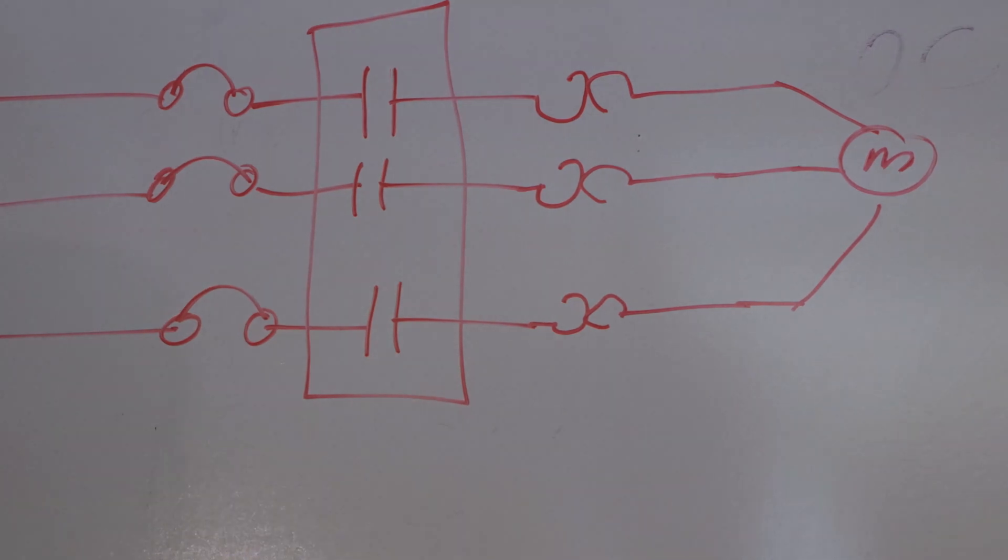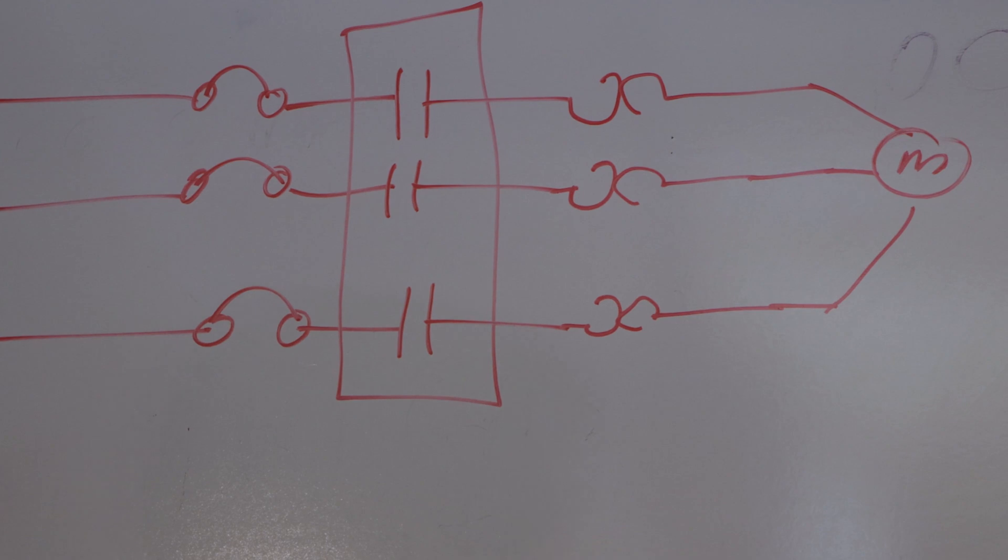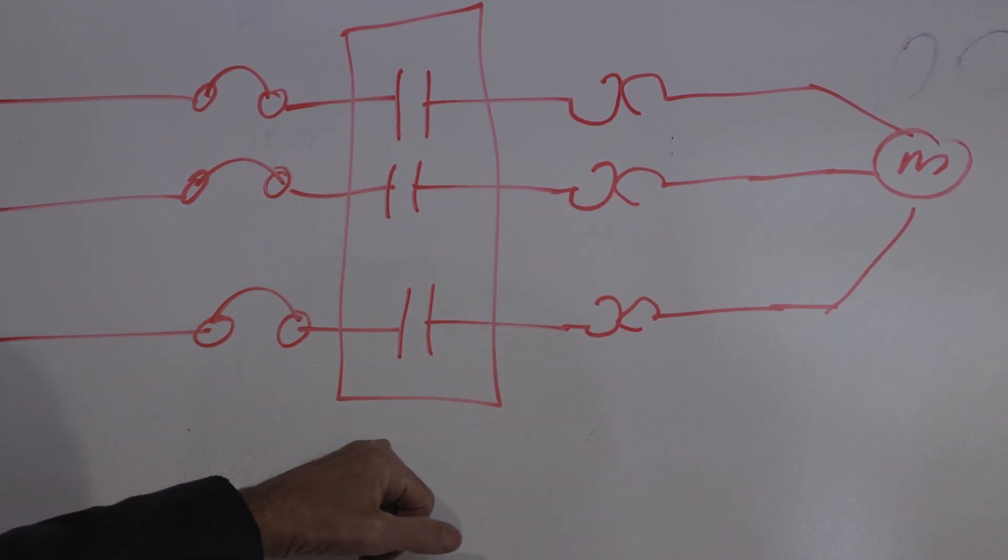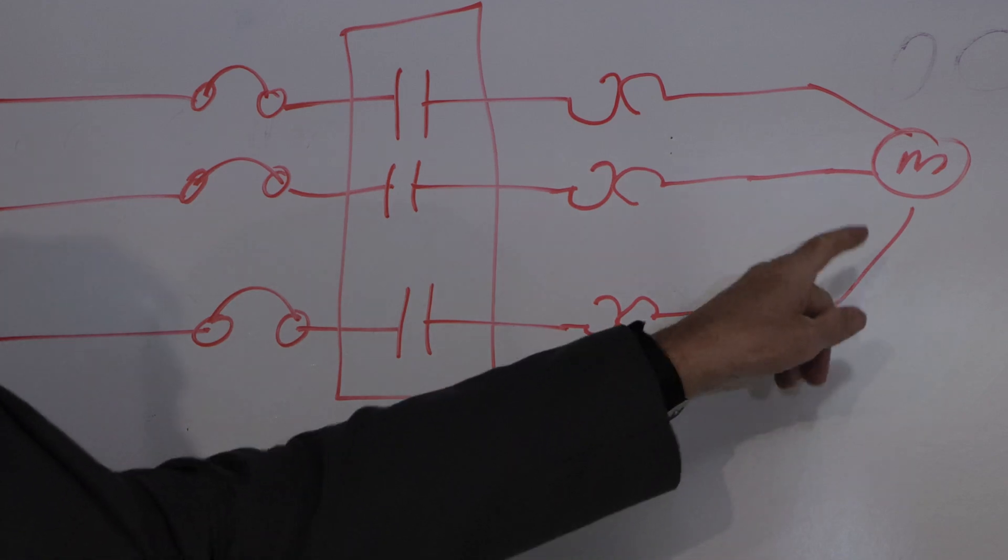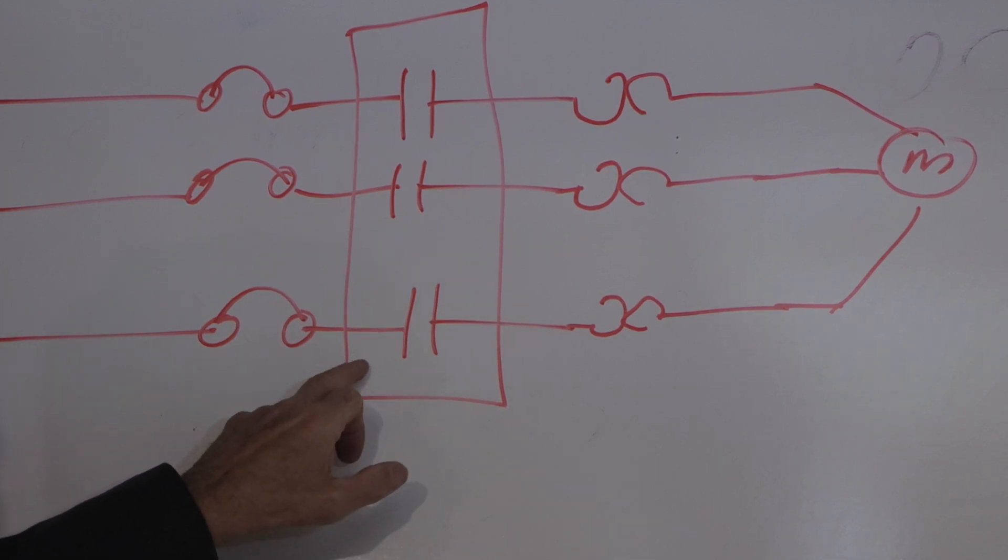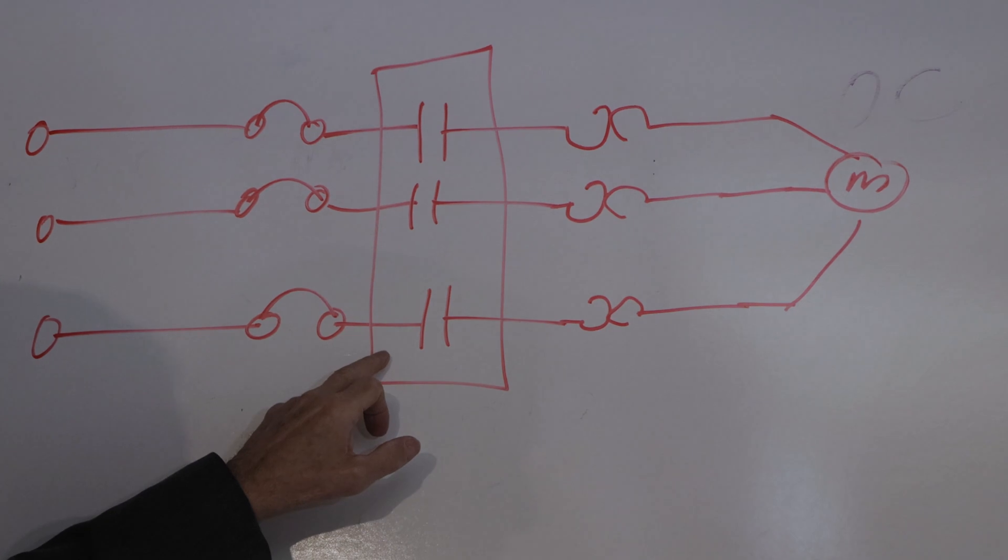So there's basically, diagrammatically anyway, your entire motor circuit: short circuit protection, contactor, overload protection, and motor. The control part is making this contactor come on when we want it to. And this is the part that gets a little complicated.